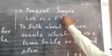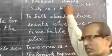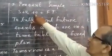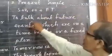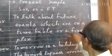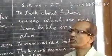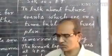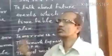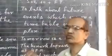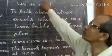Then we will discuss the present simple. Through present simple, we can also express future time. The structure is: subject plus verb plus other words. It is simple present with future time — to talk about future events which are on a timetable or a fixed plan. Suppose today is Monday and next day is Tuesday — it is fixed, it cannot be changed. So when we talk about it, we can express it through simple present.